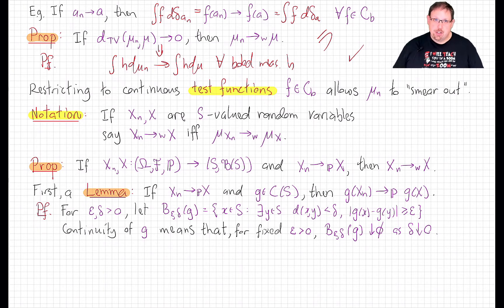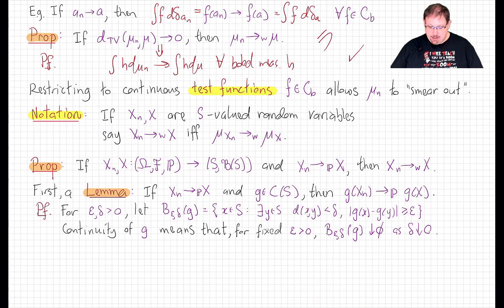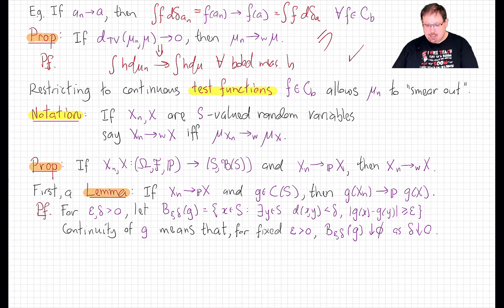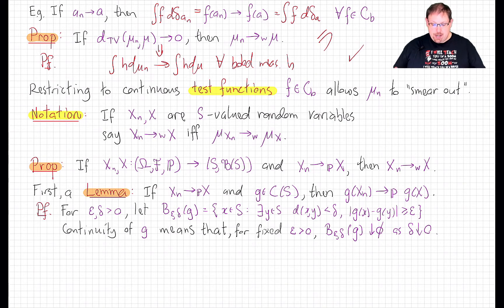Just as with total variation convergence, we will import the idea to random variables. If I have a sequence of random variables X_n and a putative limit random variable all taking values in the same metric space S, then we say that X_n converges weakly to X if and only if the law of X_n converges weakly to the law of X. Since this notion depends only on the laws of the random variables separately, we don't even care if they are defined on the same probability space. However, if they are defined on the same probability space, we can compare weak convergence to almost sure, L^p, and convergence in probability.